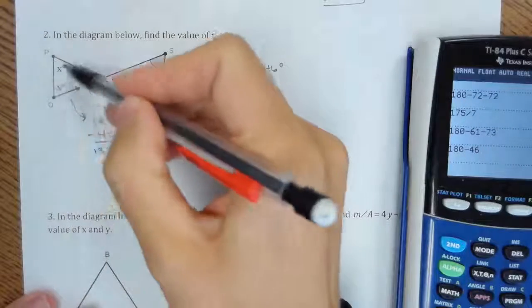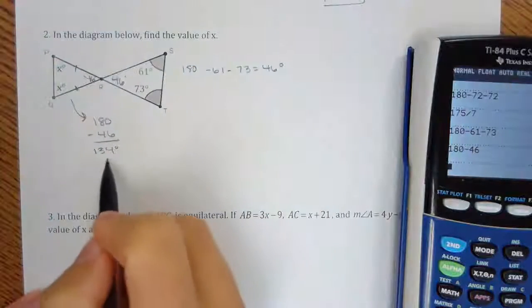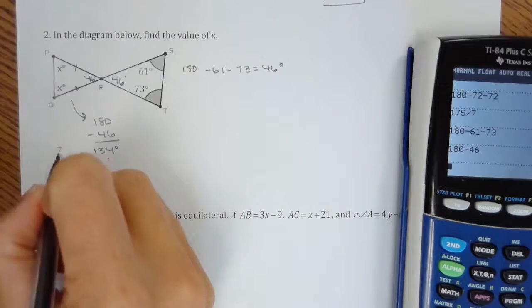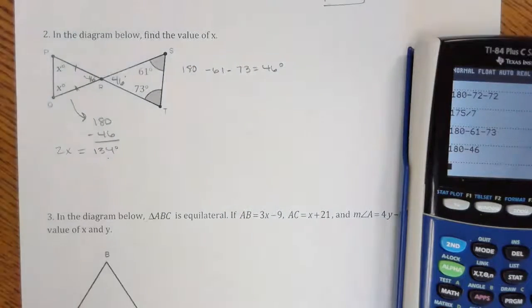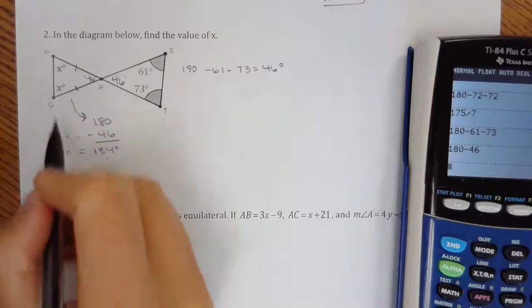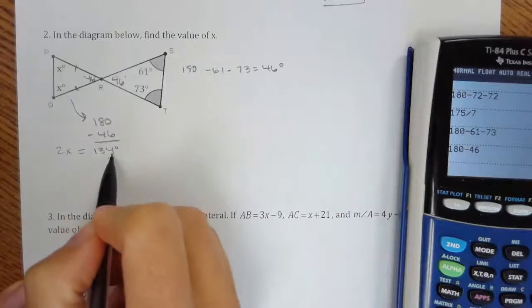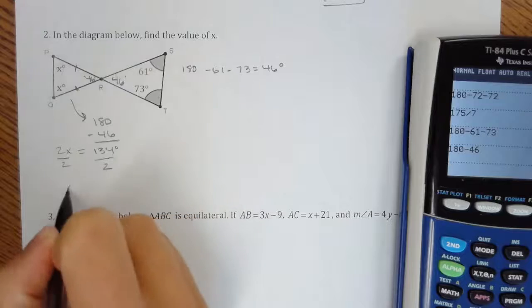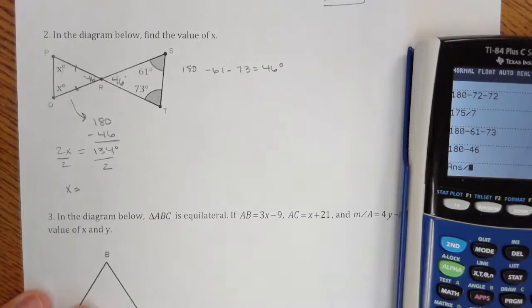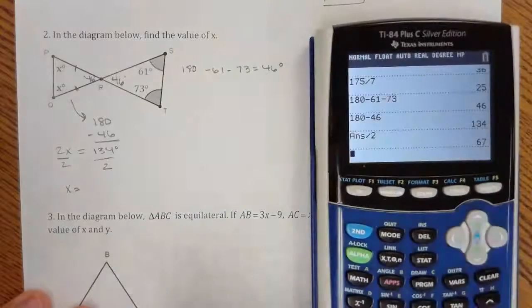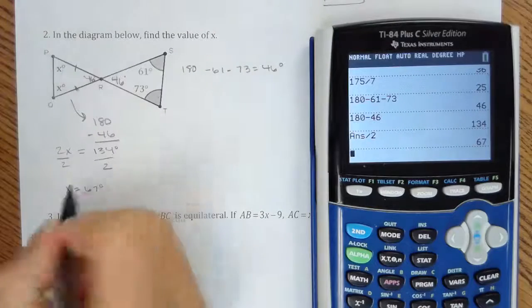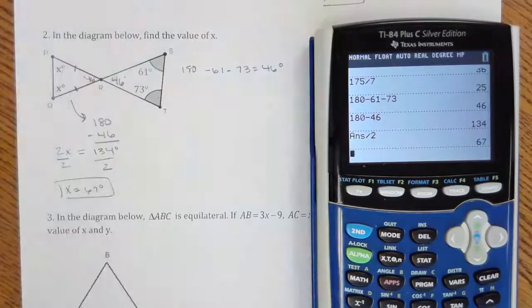So if we have two x's that equal 134, we can just create an equation. Two x's equal 134, divide by 2. So that means that x equals 67 degrees.